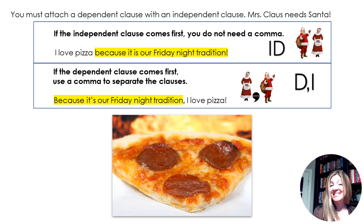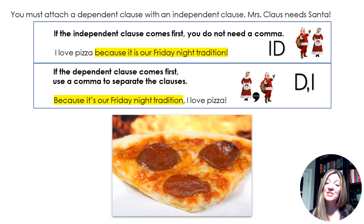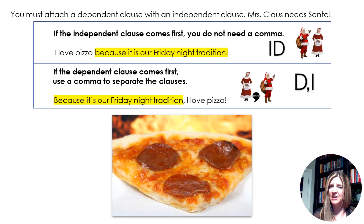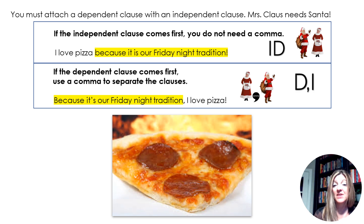Then we just play around a lot with this. 'I love pizza' — independent clause. Who loves pizza? I — subject. What do I do? Love — predicate. Complete sentence. 'Because it is our Friday night tradition' — it still has a subject and predicate, but it wouldn't make sense by itself. If I join my independent and my dependent: 'I love pizza because it's our Friday night tradition' — no comma needed. If I start with the dependent clause: 'Because it's our Friday night tradition, I love pizza' — then you need a comma. When we're just speaking, we naturally have a little pause or take a breath there.